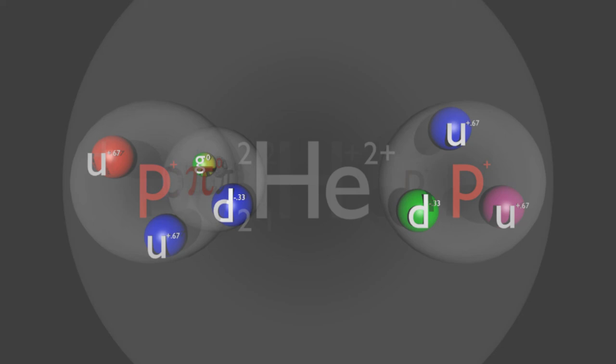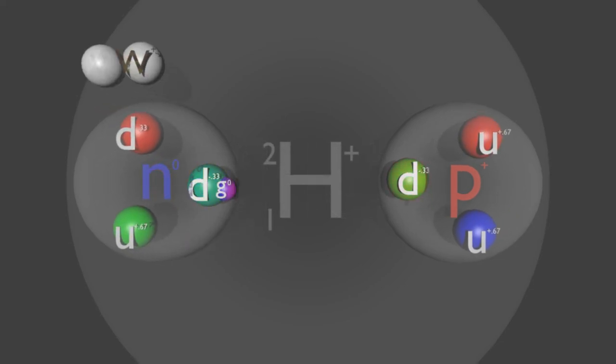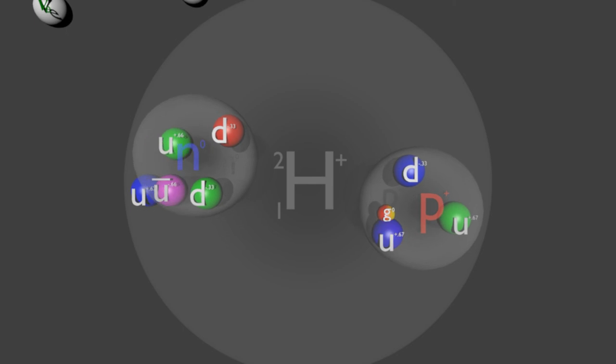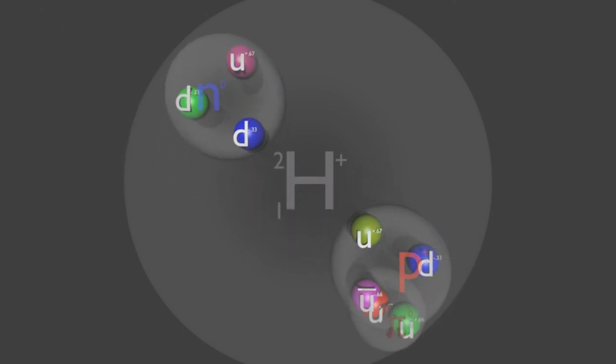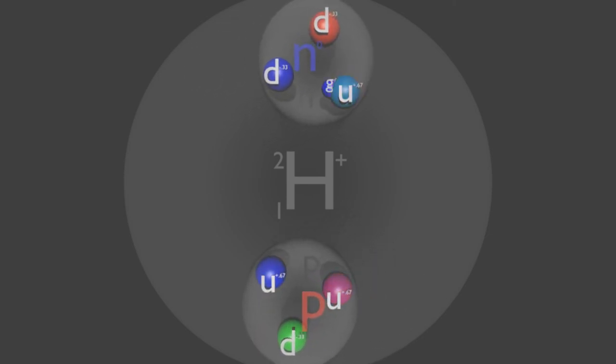However, in some cases the weak interaction may kick in and cause a process known as beta plus decay. One of the up quarks in one of the protons turns into a down quark and emits a positive weak boson. This then decays into an electron neutrino and an anti-electron or positron. Thus one of the protons is transformed into a neutron and the whole setup becomes a stable particle known as a deuteron.